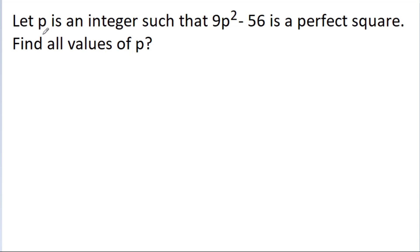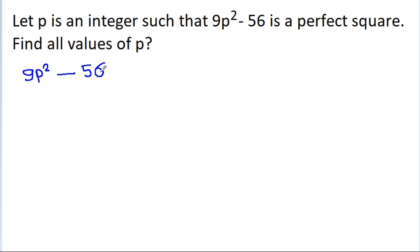In this video, we have given that p is an integer such that 9p squared minus 56 is a perfect square. Then we have to find all values of p. So, we have given that 9p squared minus 56 is a perfect square.